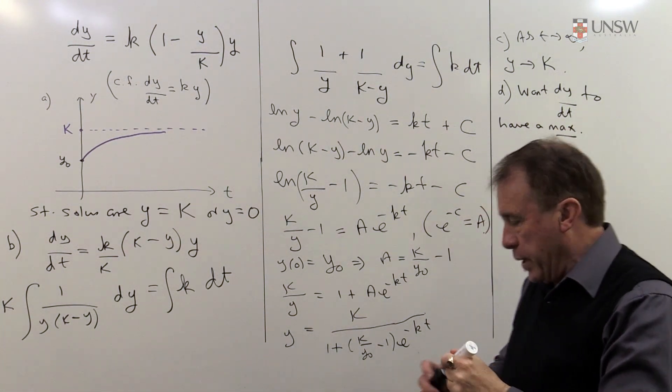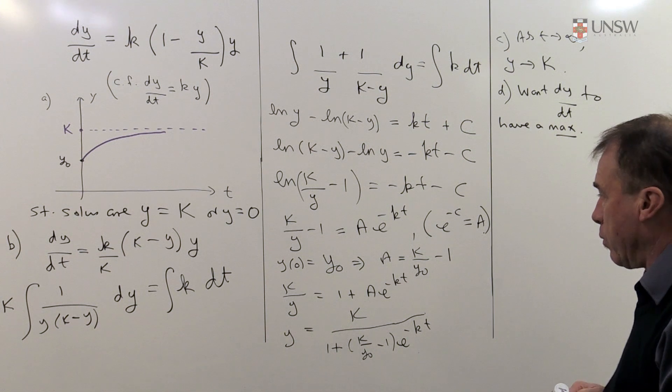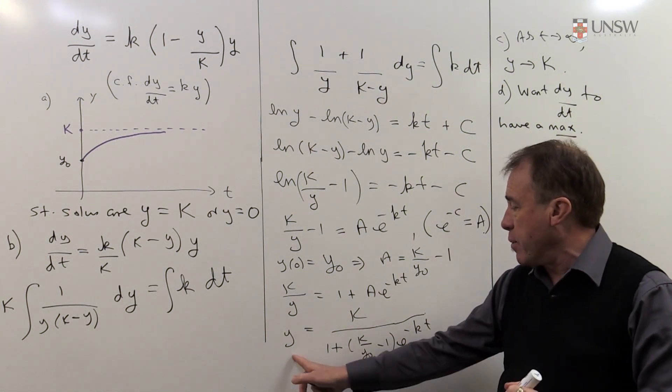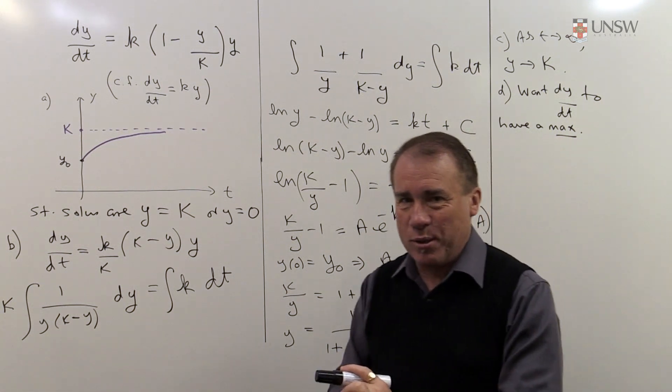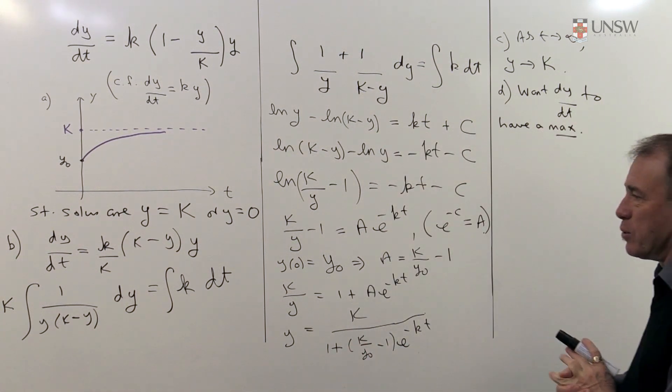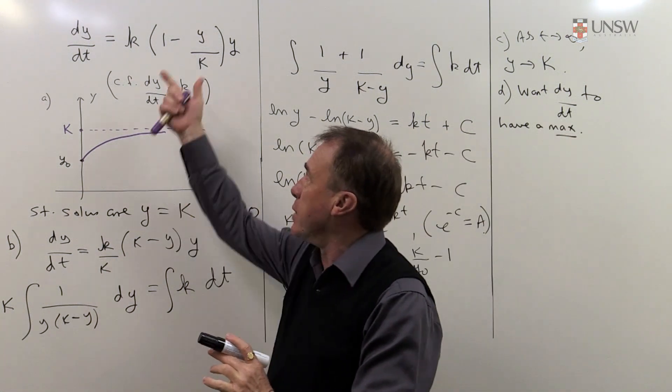Well, one might be tempted to say, well, how do you check when something's got a maximum? Well, you take its derivative, so you might want to take this and take the second derivative of it. Sounds horrible and complicated if we'd equal to 0, but it's much easier if we just go back to the differential equation itself.